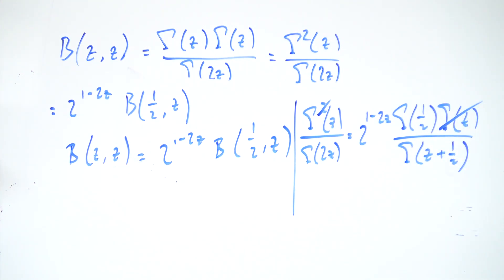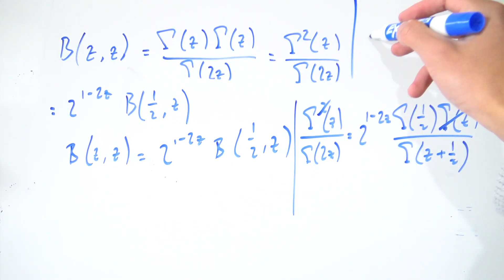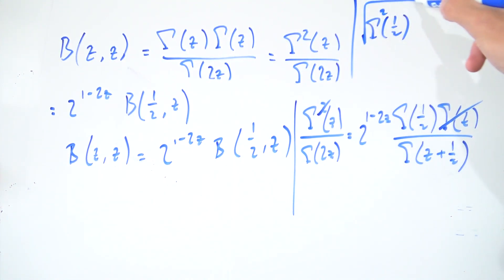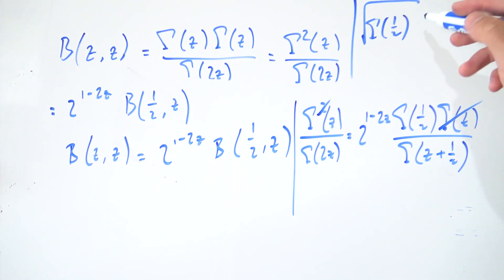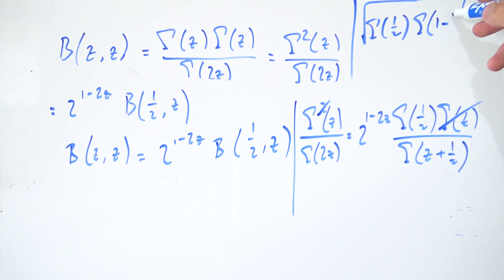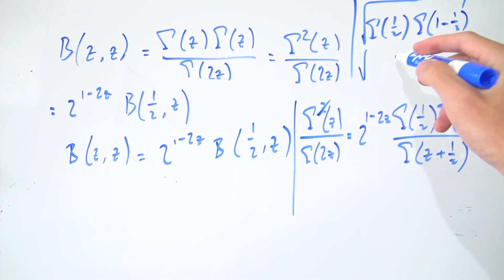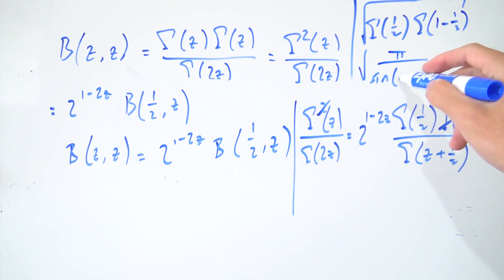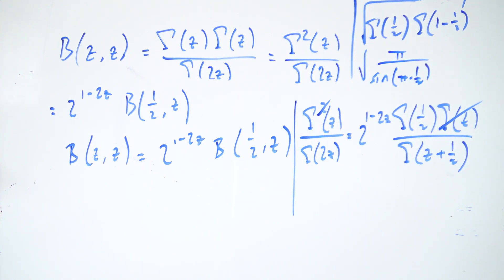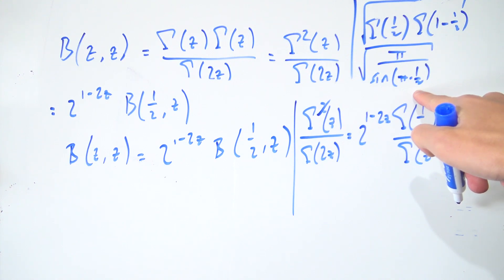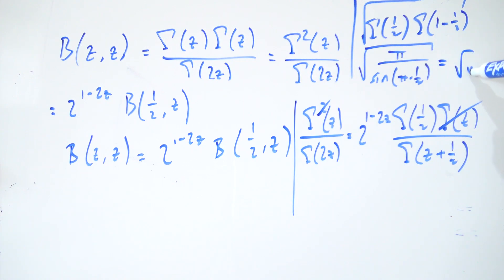Gamma of one half is the square root of pi. You can derive this from the Euler reflection formula — I've made a video on that, linked above. Gamma of one half equals the square root of gamma squared of one half, and using the reflection formula, gamma of one half times gamma of one minus one half equals pi over sine of pi times one half. Since sine of pi over two is 1, that gives gamma of one half equals the square root of pi.